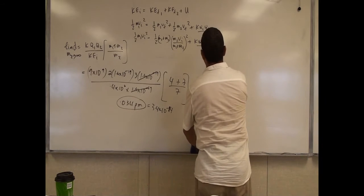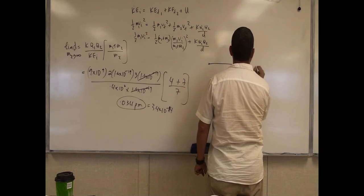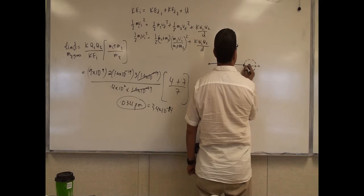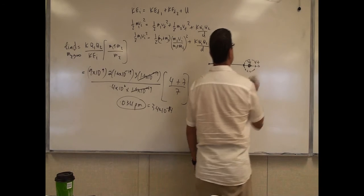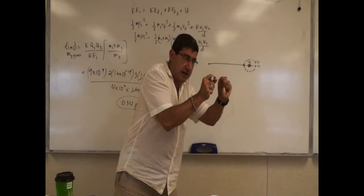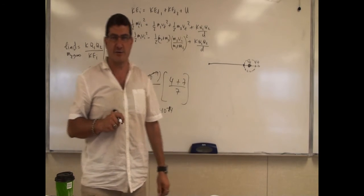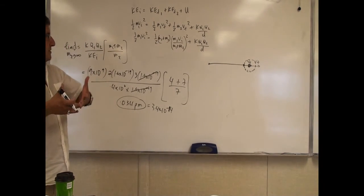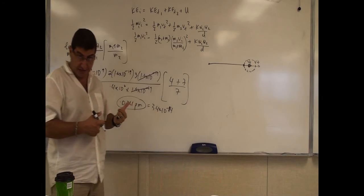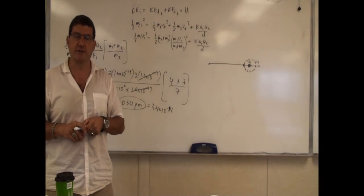So at closest approach, the alpha particle and lithium nucleus move at the same velocity within a sphere about 10 times the size of the nucleus. After that the alpha particle slows and eventually returns back. This is a good combined problem involving conservation of energy, momentum from mechanics, modern physics concepts like Rutherford's atomic model, and electricity and magnetism. Thank you very much.